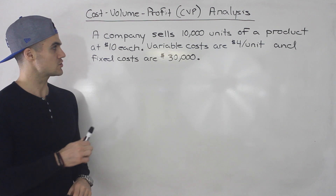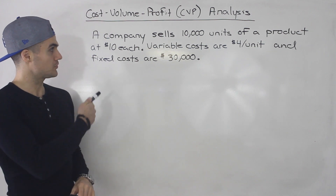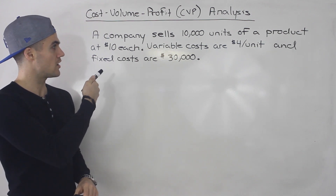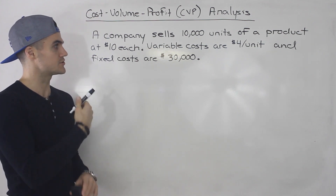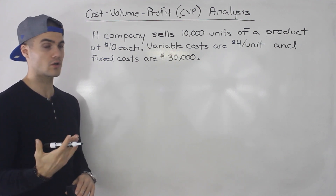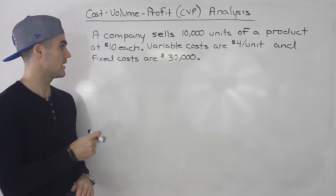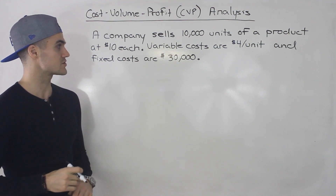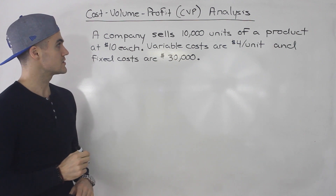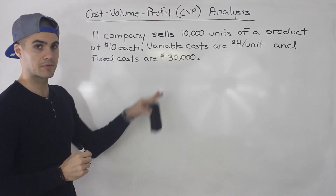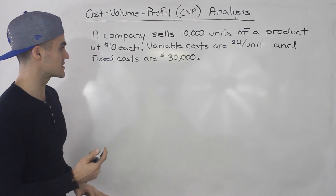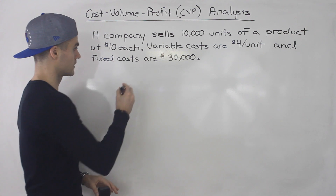So let's introduce an example here. Let's say a company sells 10,000 units of a product at $10 each, variable costs are $4 per unit, and fixed costs are $30,000. What I'm going to do is take this scenario and make an income statement from it.